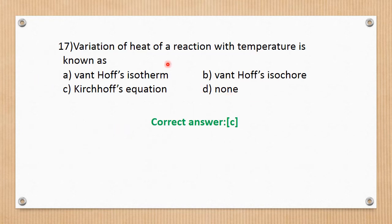Question number 17. The variation of heat of reaction with temperature is known as Kirchhoff's equation. This is very important and repeatedly asked in university examinations. The correct answer is C.